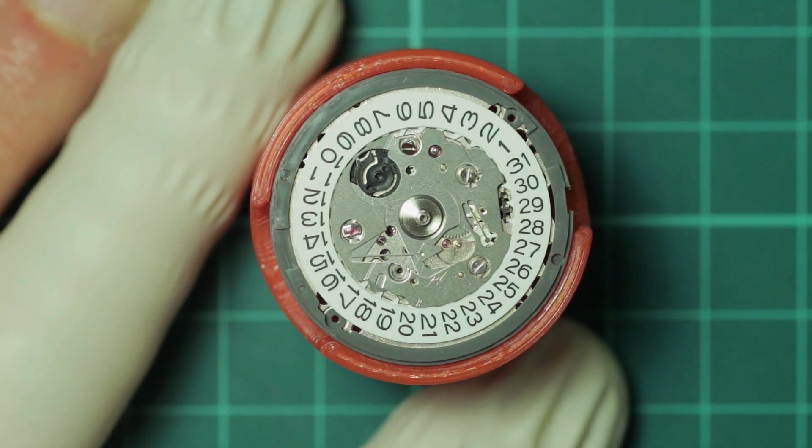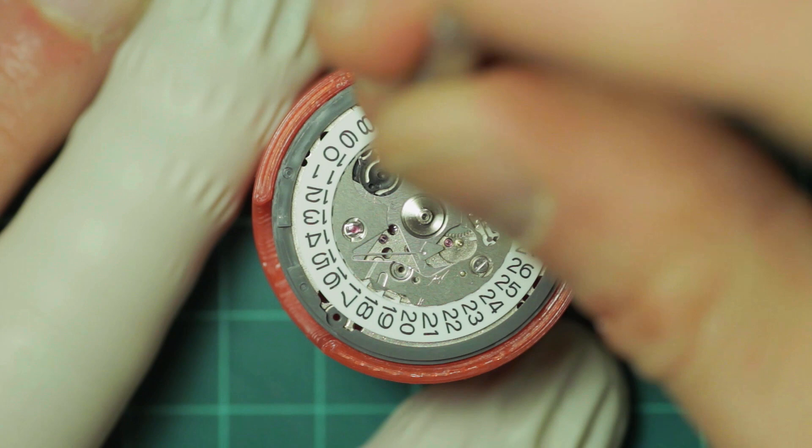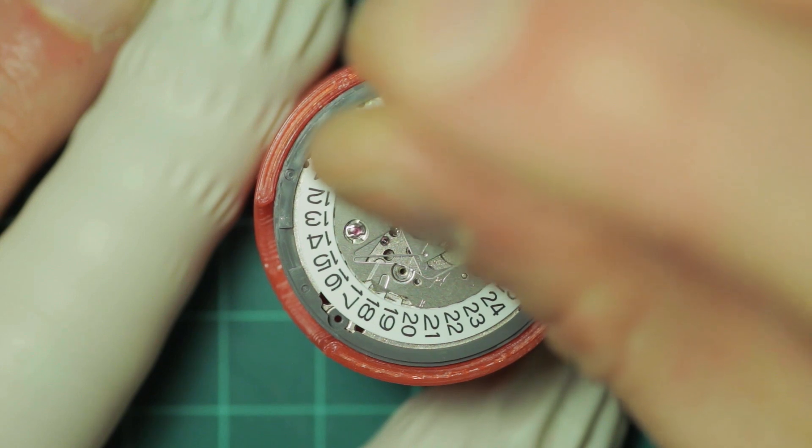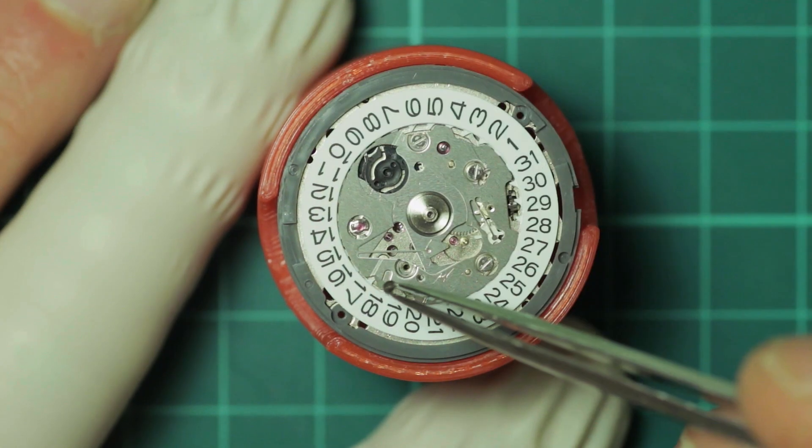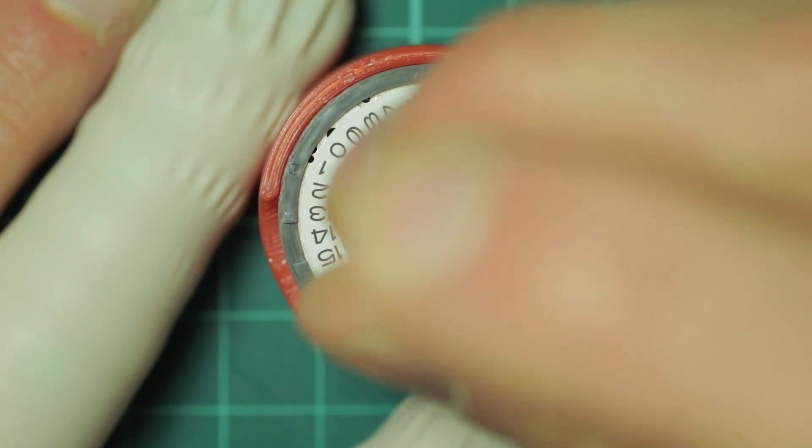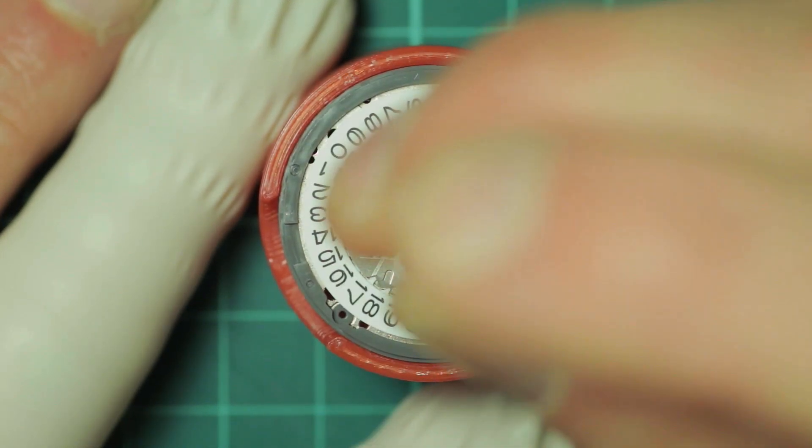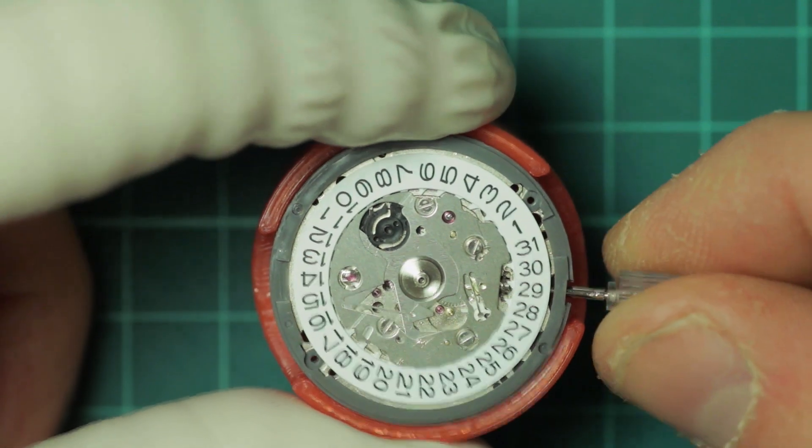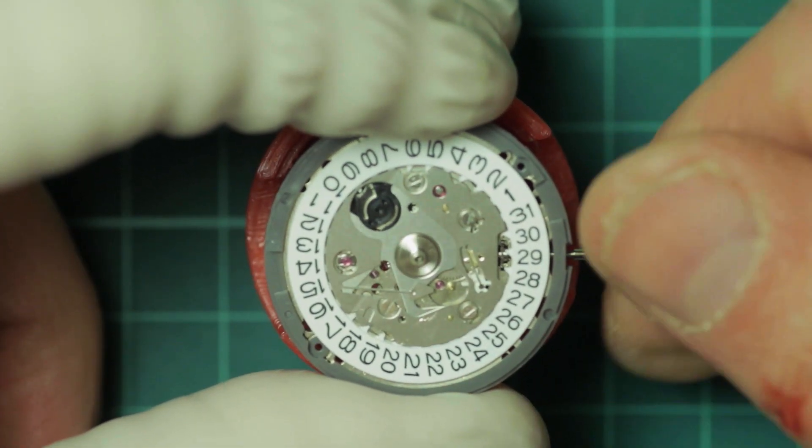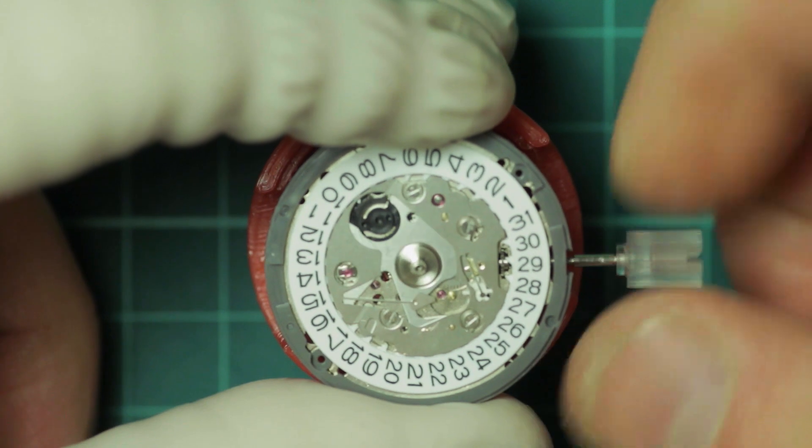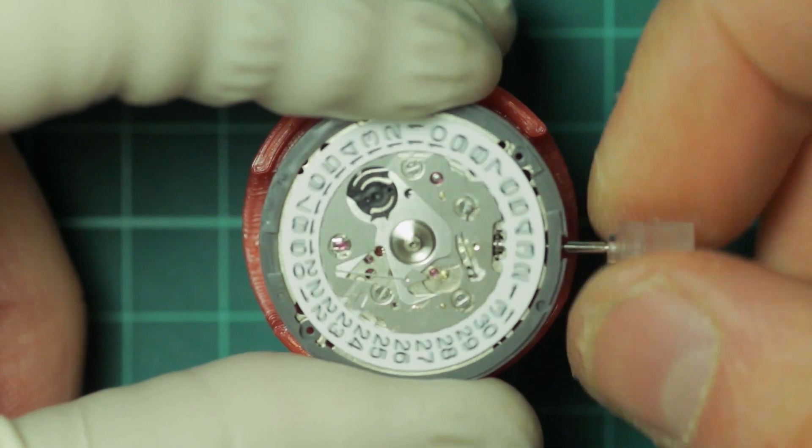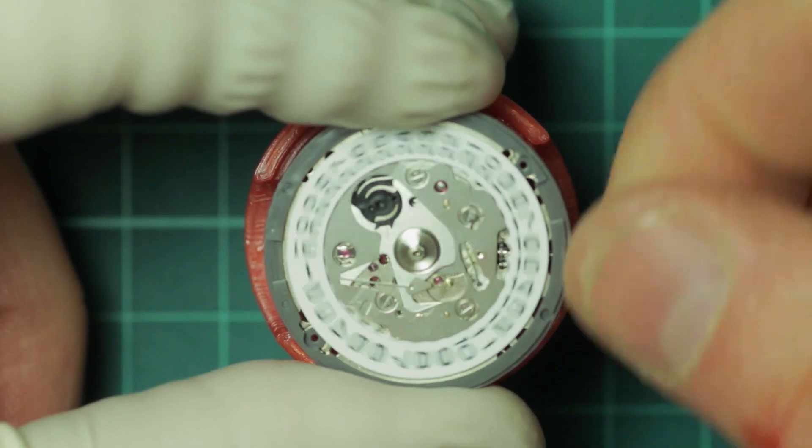And once this is all back in place, I will refit the stem and just test the functions, making sure that the rapid date change works and that it winds forward and clicks over the day accordingly. Now because I don't have a dial or hands for this, as I say it was just a movement, a loose movement on its own, I can't actually demonstrate that running and showing you the seconds hand running. So at the end of this rebuild video I did include a short clip of the watch on the timegrapher.